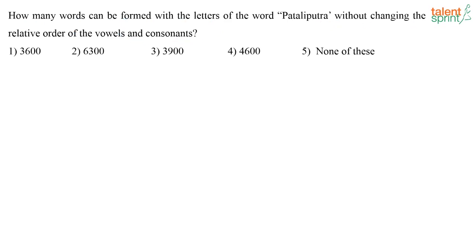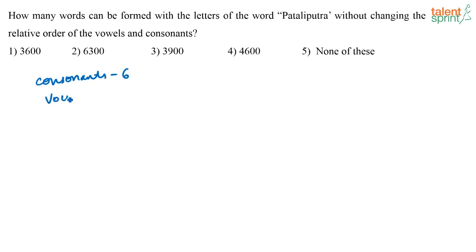So how many letters are there in this word PATALIPUTRA? Totally 11 letters are there. Out of which, how many consonants are there? There are 6 consonants and there are 5 vowels.